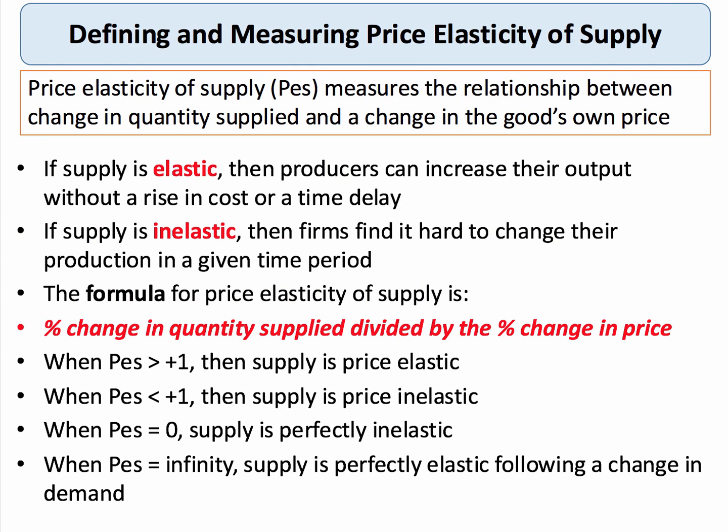Elasticity of supply measures the responsiveness of quantity supplied to a change in price. When supply is elastic, firms can increase their production without any rise in cost or time delay. But as we've seen in that example, 0.4 suggests a low supply elasticity — businesses finding it difficult to change their production in a given time period. When price elasticity of supply is less than one, we say that supply is price inelastic, and that's the case in this question.